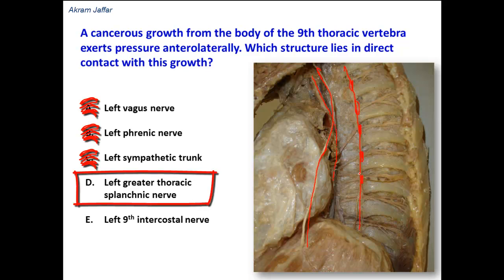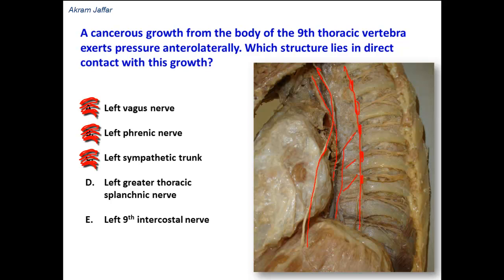The left greater thoracic splanchnic nerve is formed by splanchnic branches that together form the greater splanchnic nerve. These are preganglionic sympathetic fibers branching from the medial side of the sympathetic trunk. As you can see, they pass close to the anterolateral surface of the vertebrae, descending through the diaphragm to synapse in the prevertebral ganglia in the abdomen. This is the location at the ninth intercostal space, so it is the left greater thoracic splanchnic nerve that is likely to be affected by a tumor growing anterolaterally from the ninth thoracic vertebral body.